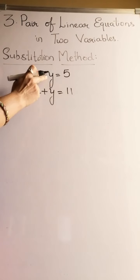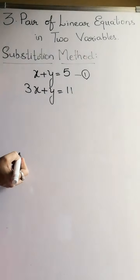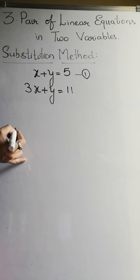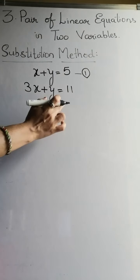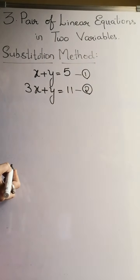Our first equation is x plus y equals 5. Let this be our first equation, and our second equation is 3x plus y equals 11. So this is our second equation.